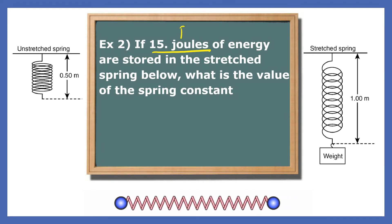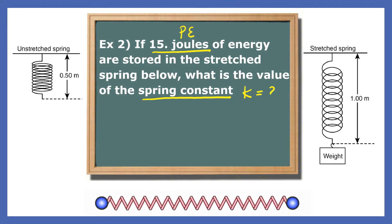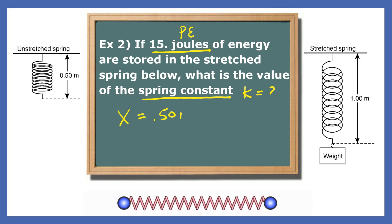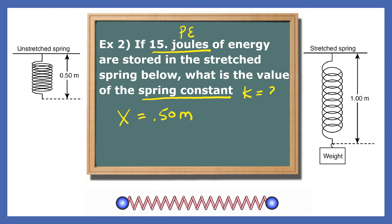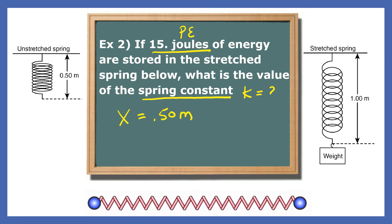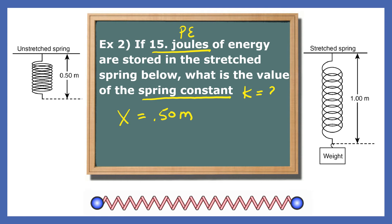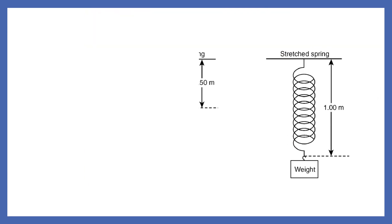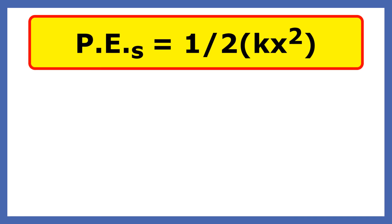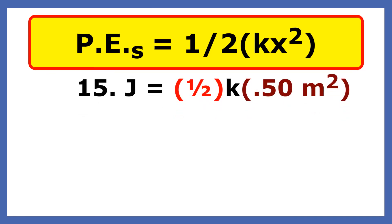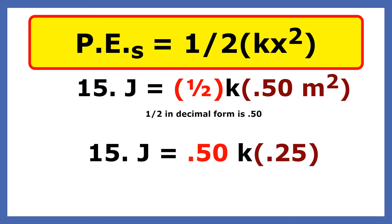If 15 joules of energy is stored in the stretched spring below, what is the value of the spring constant? Before the weight is added to the spring, it's 0.5 meters long. When the weight is added, the spring's new length is 1 meter. This means that the spring has stretched 0.5 meters. The equation for potential energy can be found on your reference table — it's 1 half kx squared. When we substitute the potential energy and the stretch that was given, we get a spring constant of 120 newtons per meter.